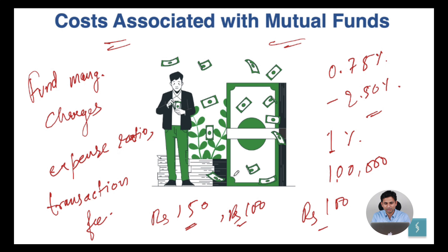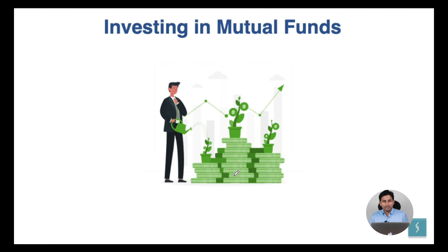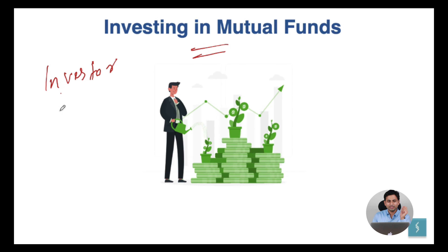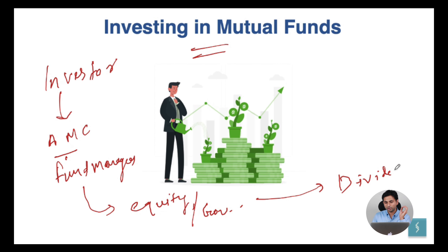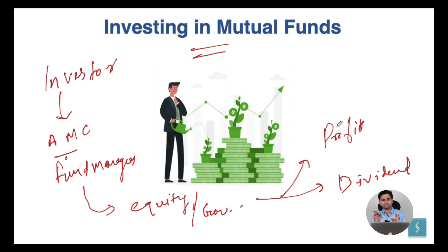You can check the exact charges with the AMC's — Asset Management Companies — and the mutual fund in which you are investing. Investors give their money to AMCs, where fund managers invest it in equity, government bonds, and similar instruments. They provide you dividends from the profit they make, and you can also sell your units to make a profit.